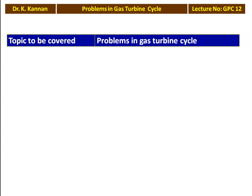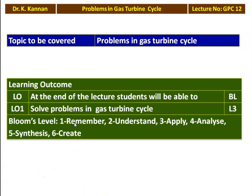We are going to solve a few problems from the Anna University question paper in the gas turbine cycle or Brayton cycle. In the earlier lecture, lecture number 5, we studied about the theory of the gas turbine cycle. Before you listen to this video, be thorough on the theory — listen to the theory part first, then listen to this problem-solving video, which will be very easy for you to understand. The learning outcome: at the end of the lecture, the student will be able to solve problems in the gas turbine cycle. This is Bloom's level 3, which is applying — applying the basic principles and basic equations studied in theory to numerical examples.